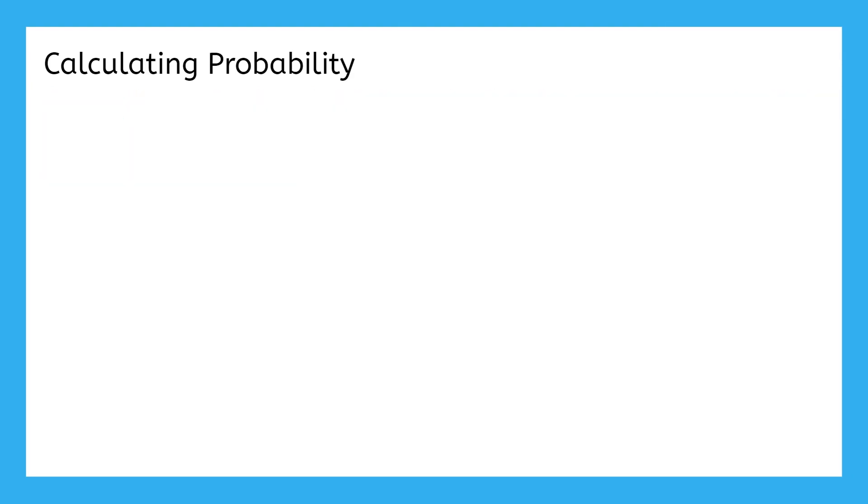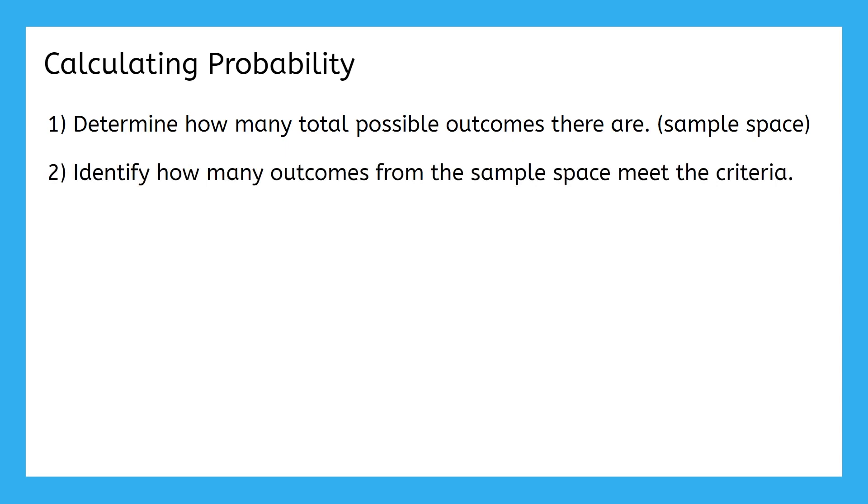Let's recap and see if we can find a way to repeat this method to find the probability of other things. How did we go about figuring out that the probability of rolling a number less than 3 on a regular die is 1 third? Well, we started by determining how many total possible outcomes there are while rolling a die. That set of all the possible outcomes is called the sample space. Then we identified how many of those outcomes from the sample space met the criteria we were looking for.